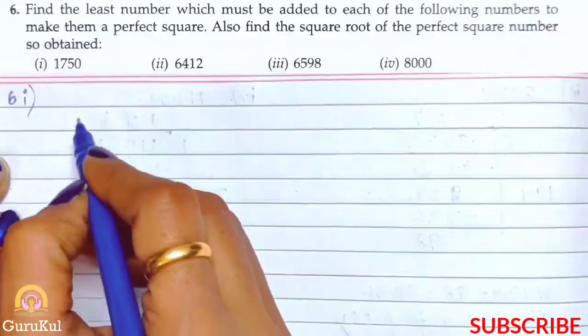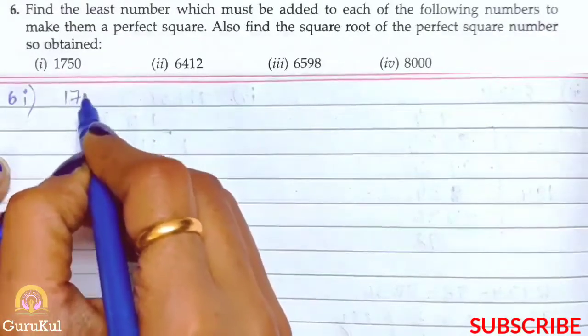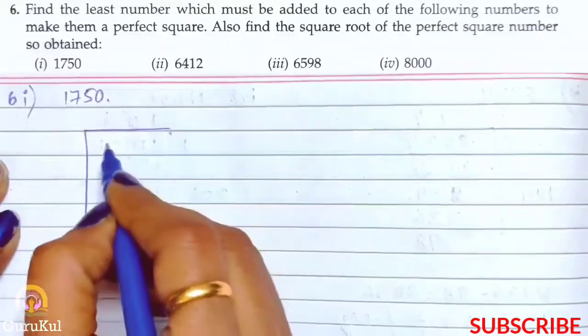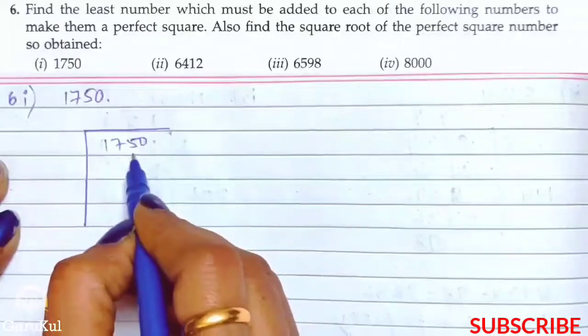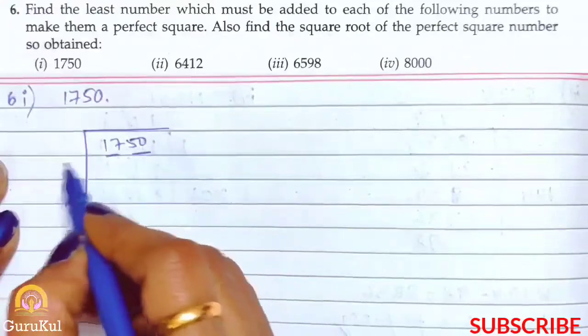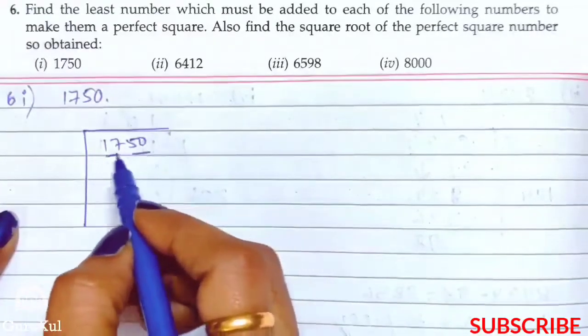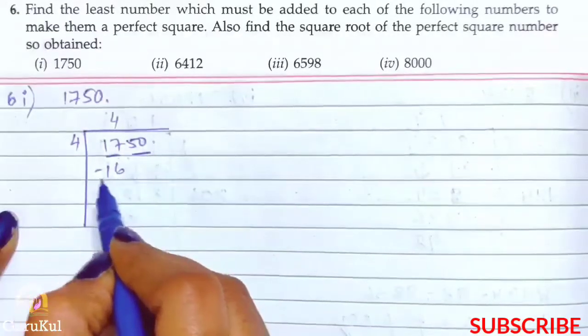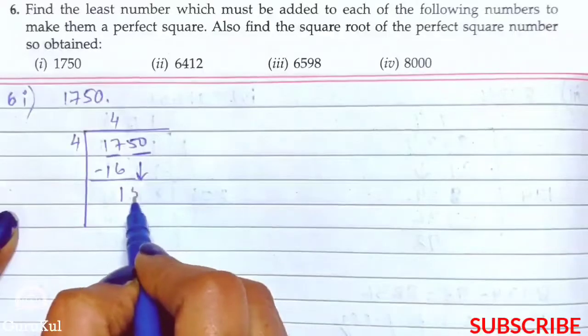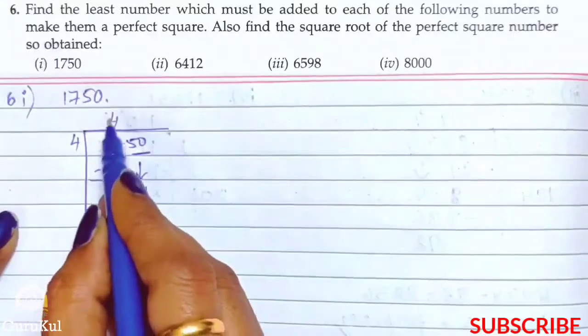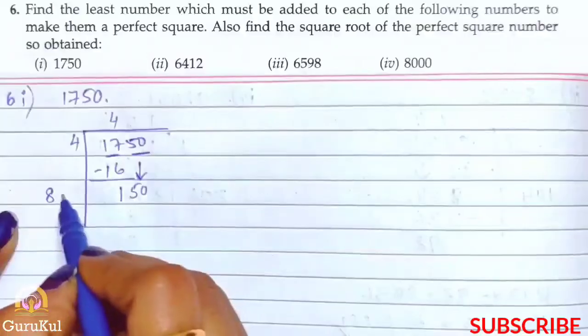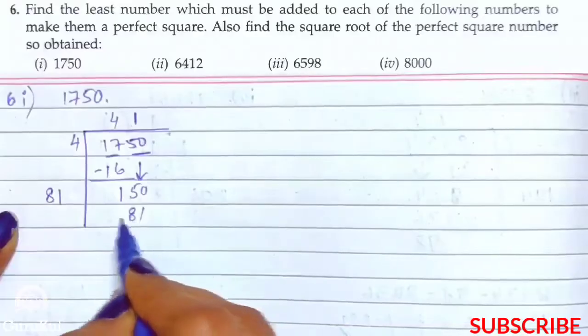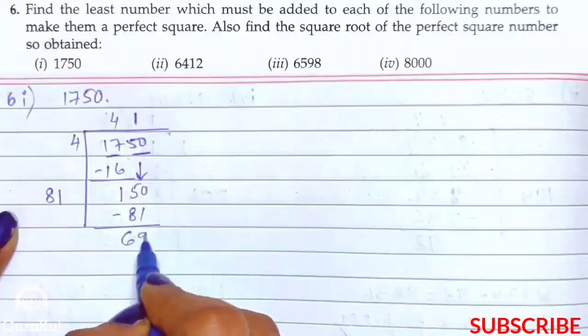So the first part of question number 6, the number given is 1750. Chali hai iska square root nikalate hai. So 1750, we will start pairing from right hand side and move towards the left hand side. So sub se pehle 4 fours are 16 remainder 1, we will bring down 50. And yaha peh ho gaya 4 ka double 8. 81 so 81 into 1 gives us 81. Hamaara remainder ho gaya 69.